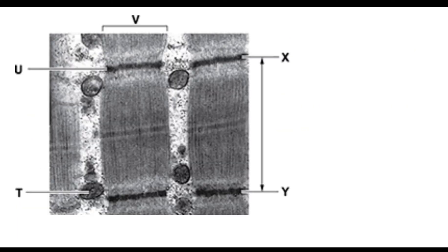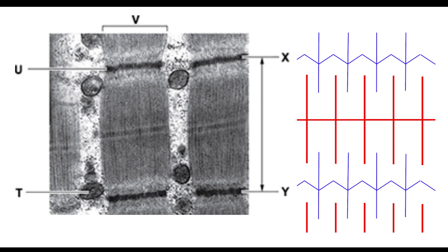What we have is actin and myosin attached to very specific anchor points. When we look at this electron micrograph, we can clearly see where our Z line is and where our M line is because they have a very distinct structure.